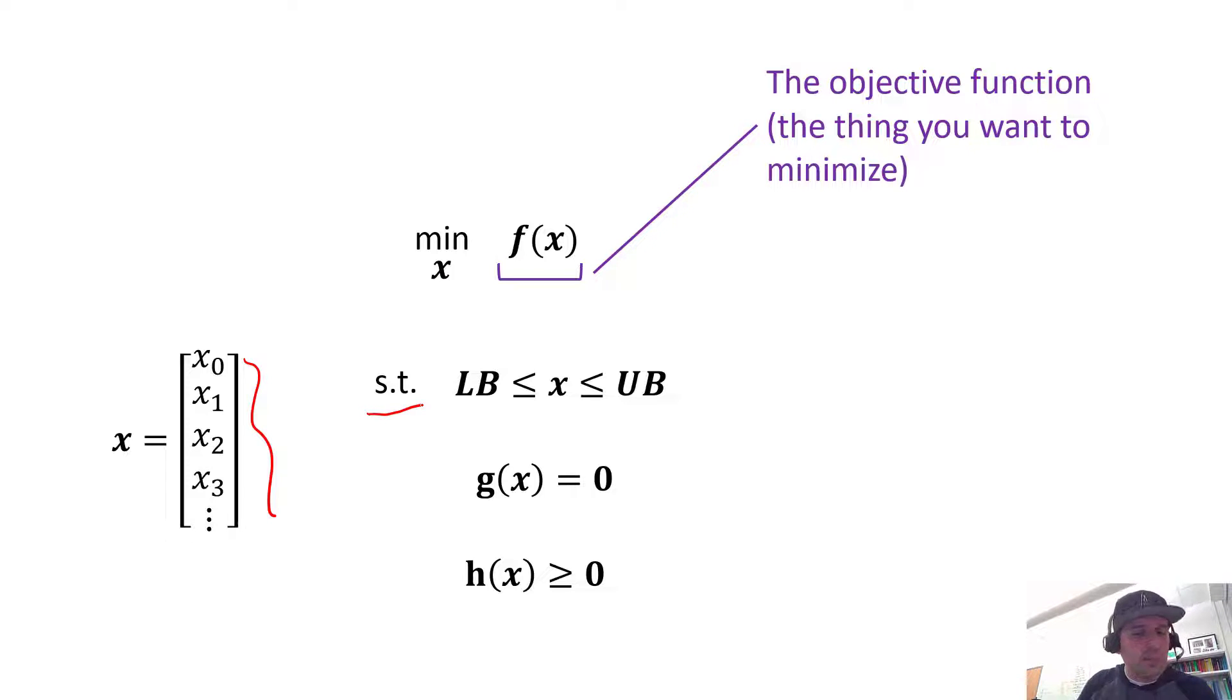Down here we have ST, which stands for 'subject to.' If you're trying to maximize the velocity of your car, you could theoretically have a car that goes infinity miles per hour. Unfortunately, cars are subject to the laws of physics and also laws of the land like speed limits. We enforce these by saying yes, we want to maximize velocity or minimize negative velocity, but we are subject to certain constraints.